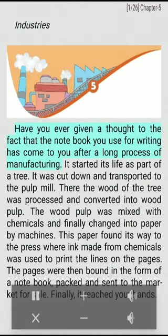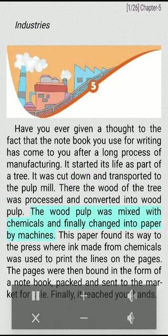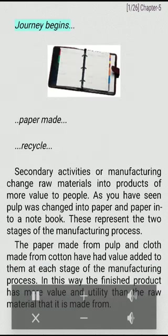Chapter 5: Industries. Have you ever given a thought to the fact that the notebook you use for writing has come to you after a long process of manufacturing? It started its life as part of a tree. It was cut down and transported to the pulp mill, where the wood was converted into pulp. The wood pulp was mixed with chemicals and finally changed into paper by machines. This paper found its way to the press where ink made from chemicals was used on the pages. The pages were packed and sent to the market for sale. Finally, it reached your hands.